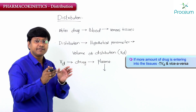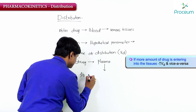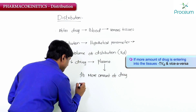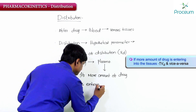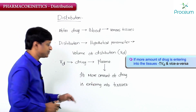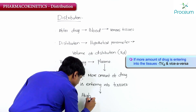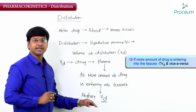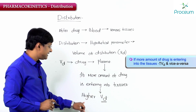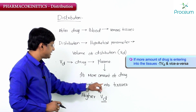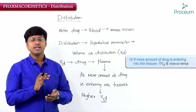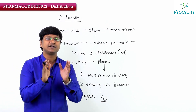If more amount of drug is entering into the tissues, then it has higher volume of distribution. Vice versa, if less amount of drug is entering into the tissues, then less will be the volume of distribution. So: more drug entering into tissues means higher volume of distribution; lesser drug entering into tissues means lesser volume of distribution.